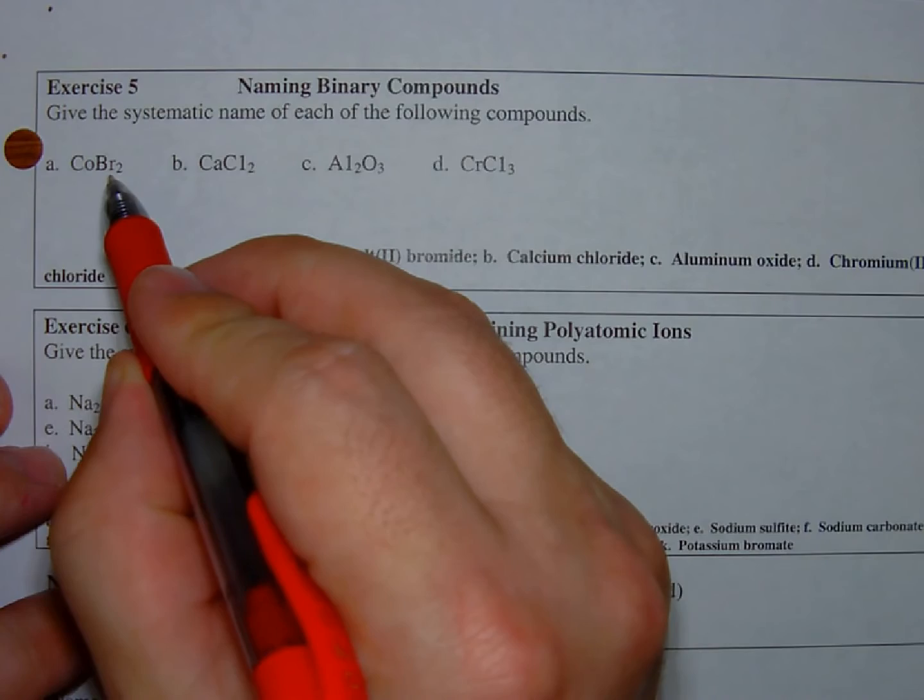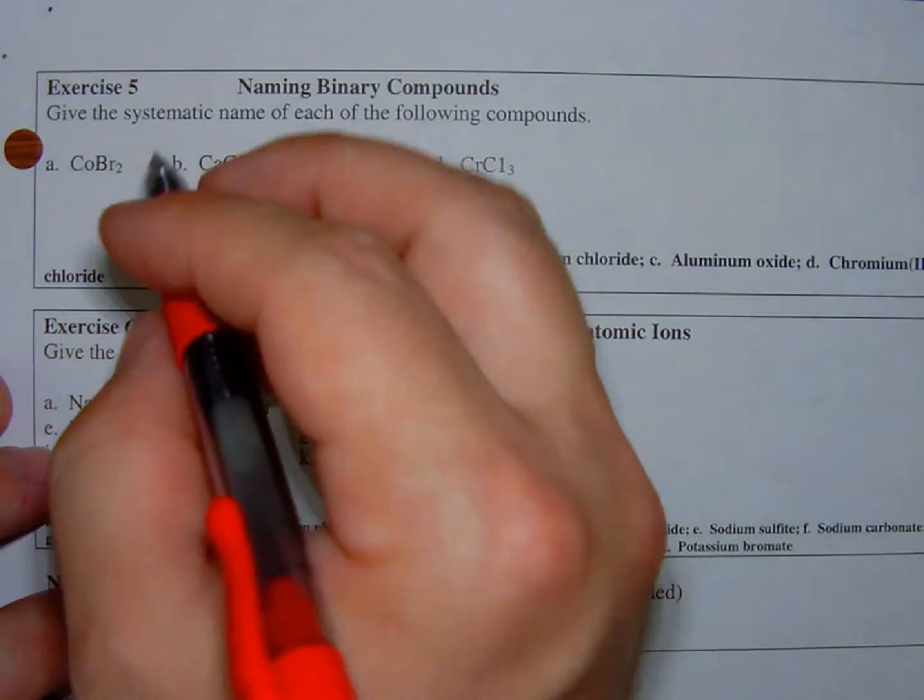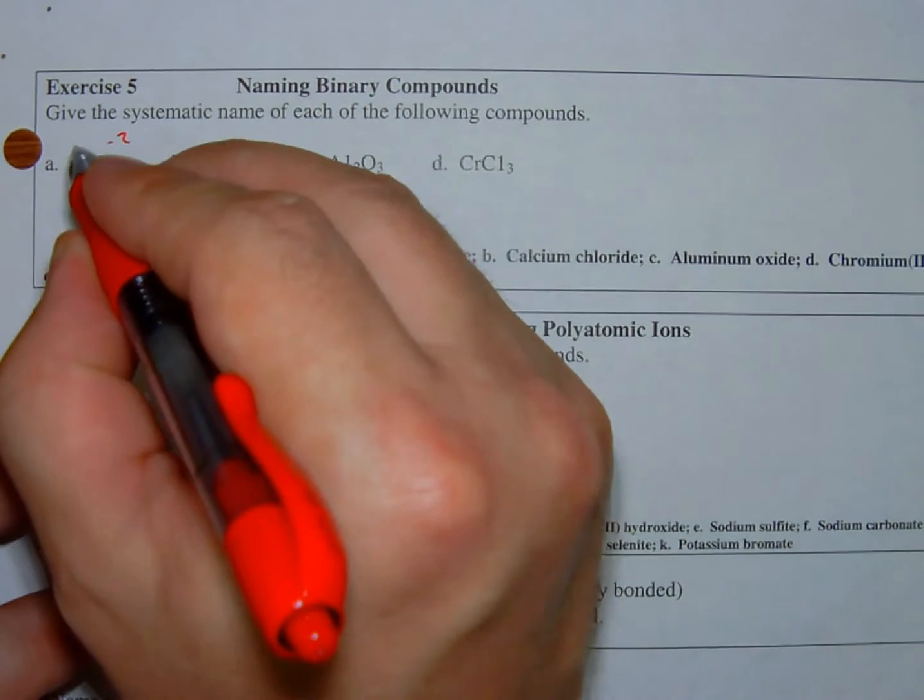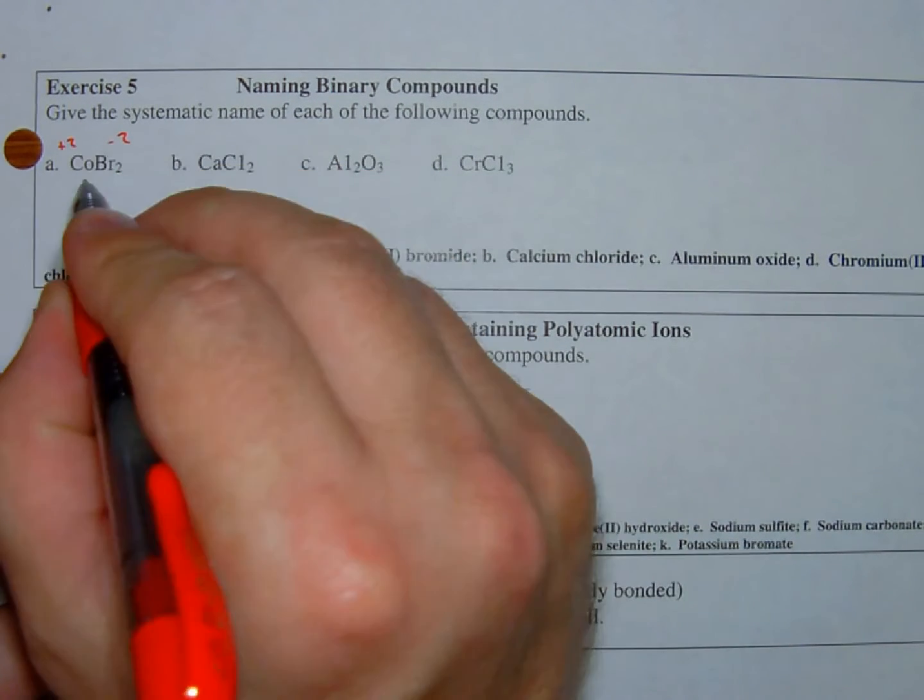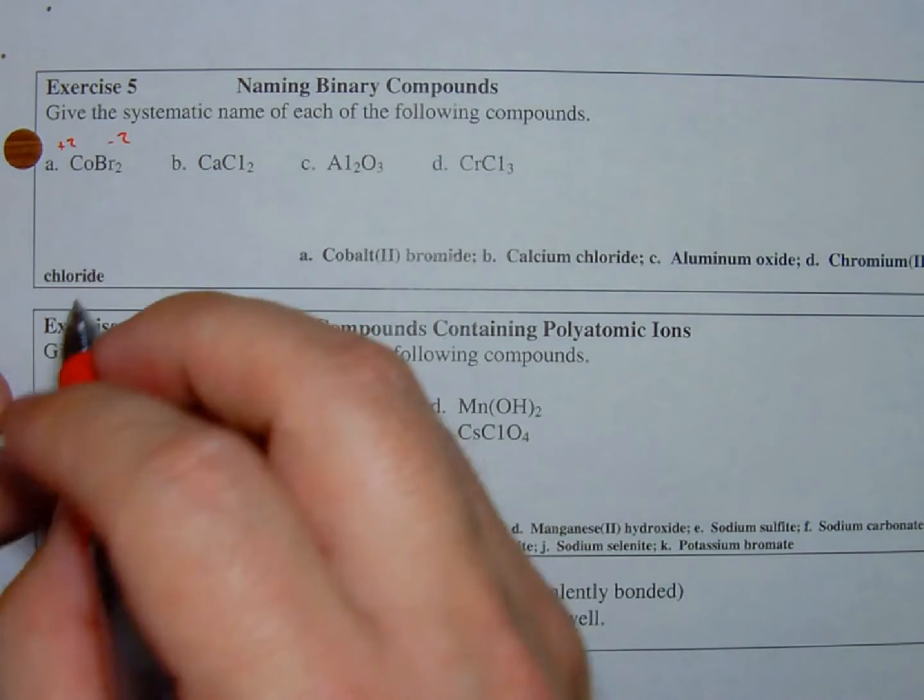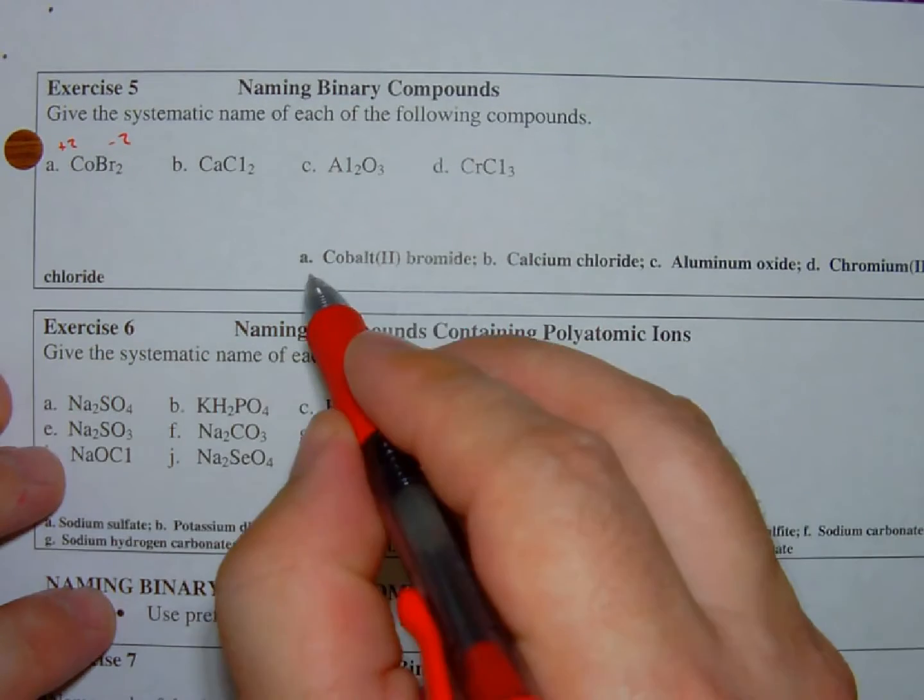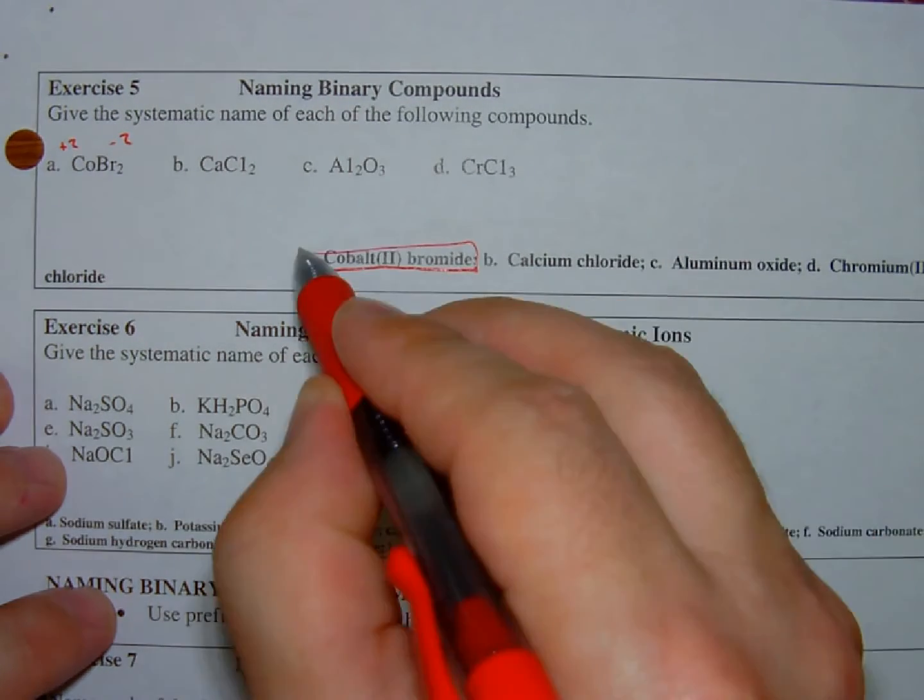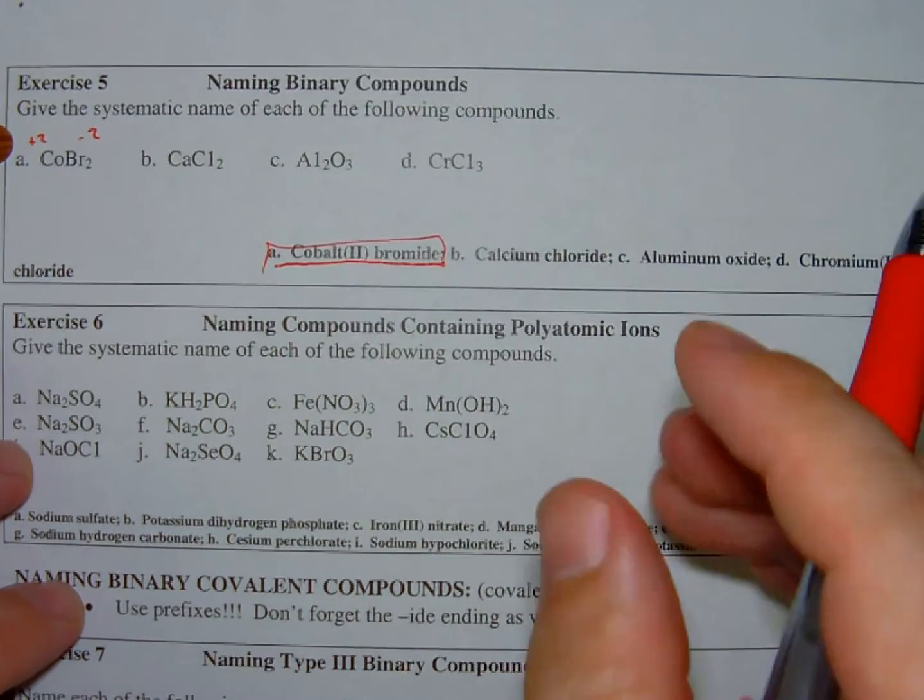So this is bromine. Bromides have a minus one charge. There are two of them, so that's a minus two. It means that cobalt has to provide a plus two. There's only one atom to do so. So that's going to be cobalt(II) bromide.